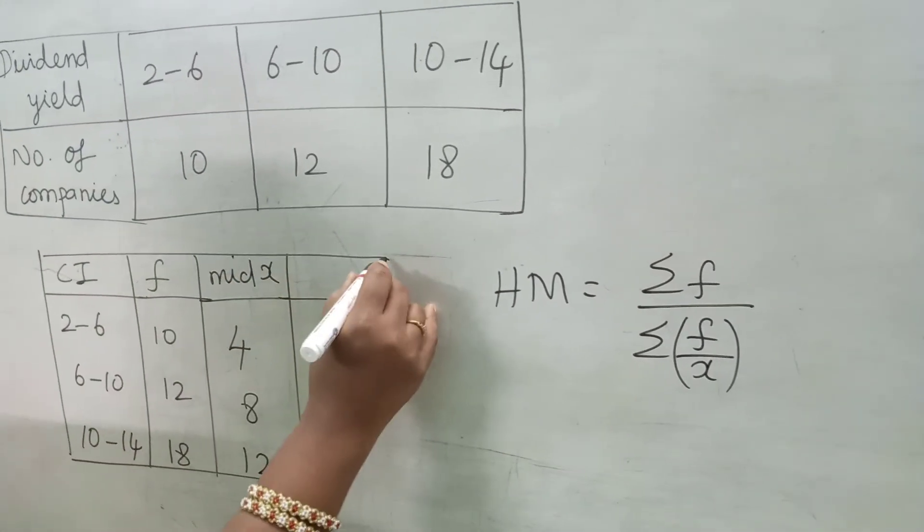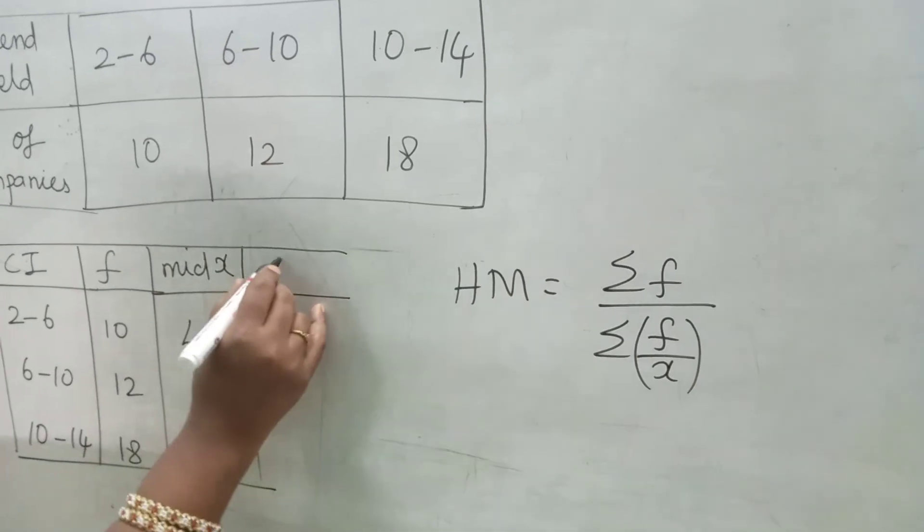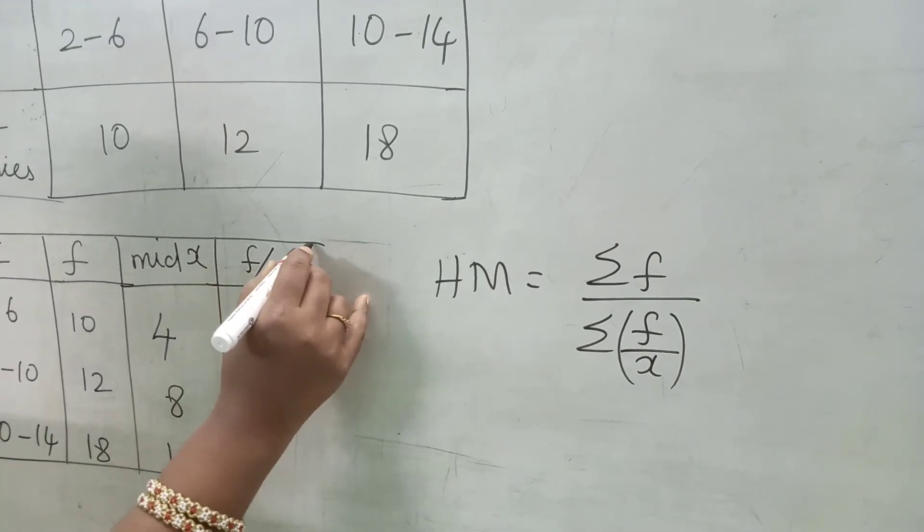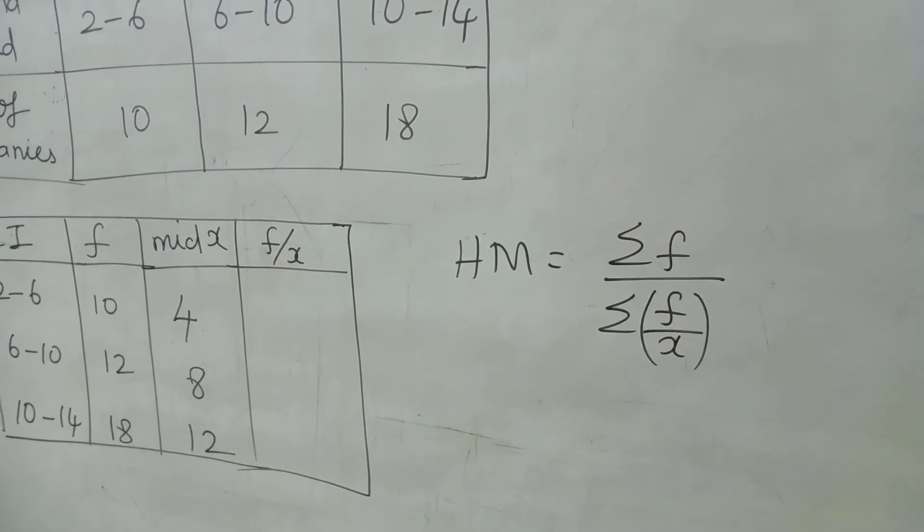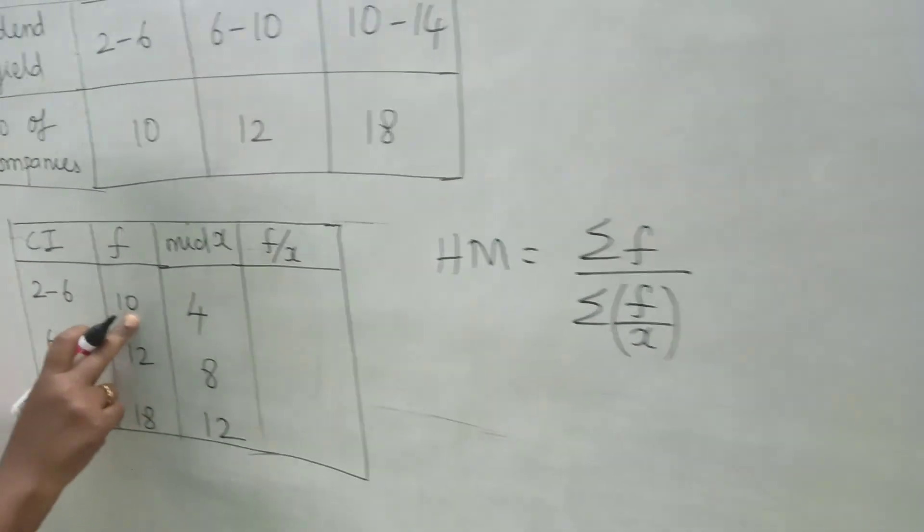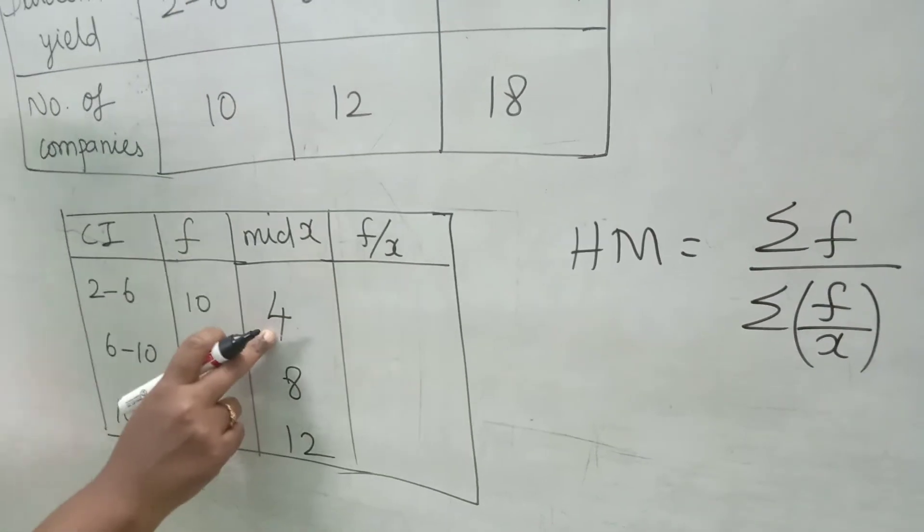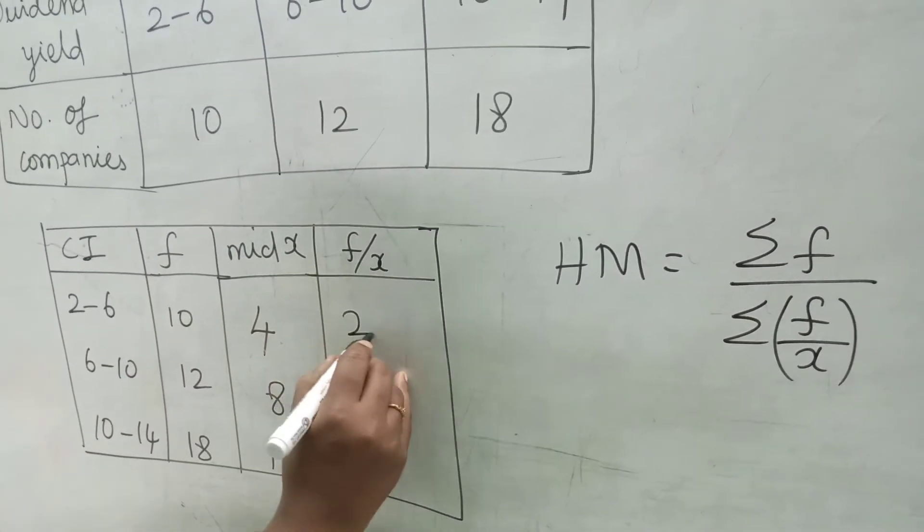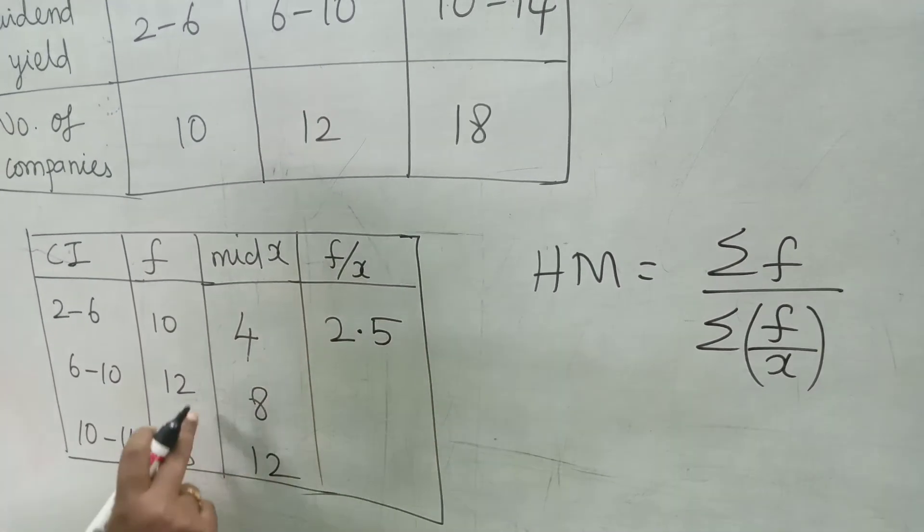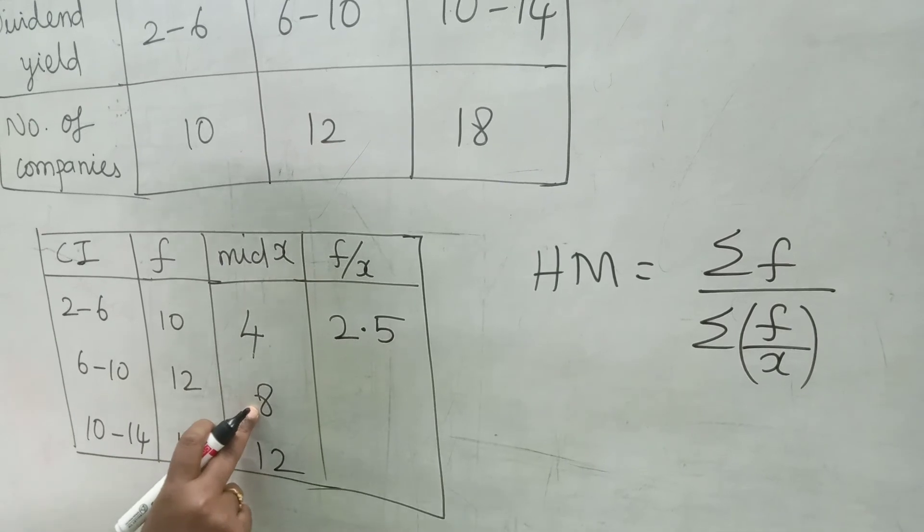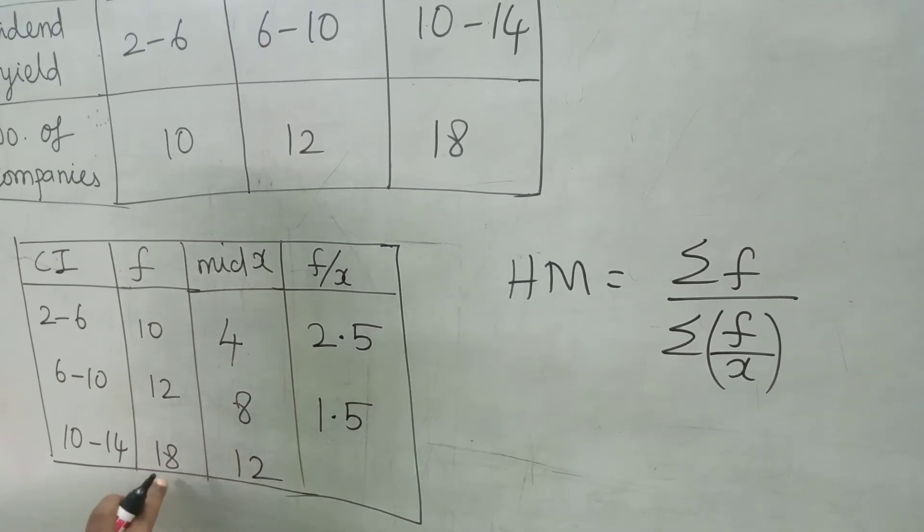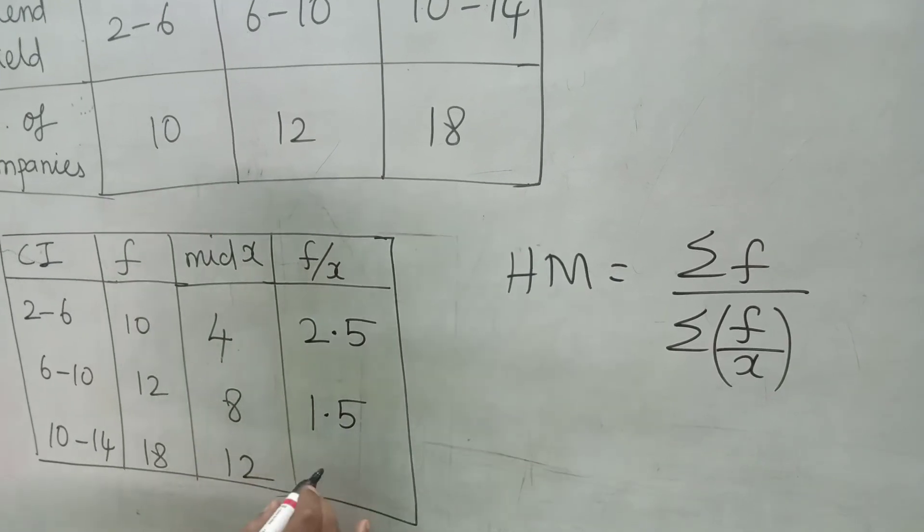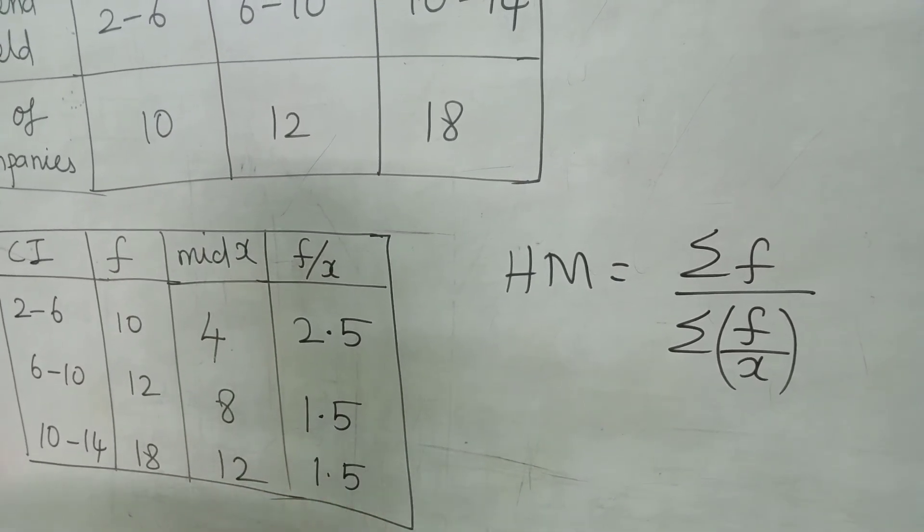Next, we are going to form F by X column, F divided by X column. Our F is 10 and X is 4. 10 divided by 4, that is 2.5. Next, 12 divided by 8, that is 1.5. 18 divided by 12, that is also 1.5.